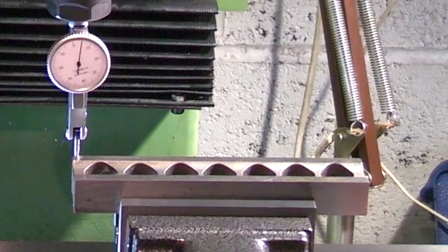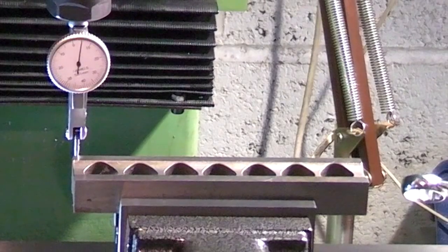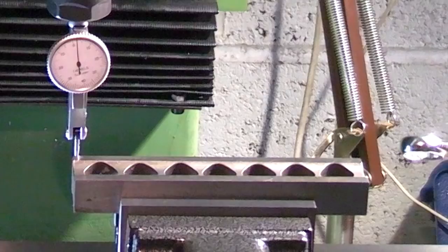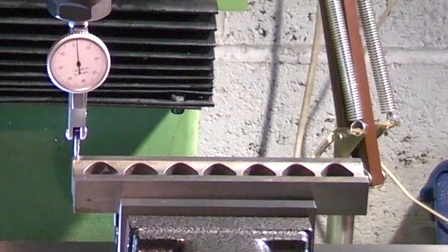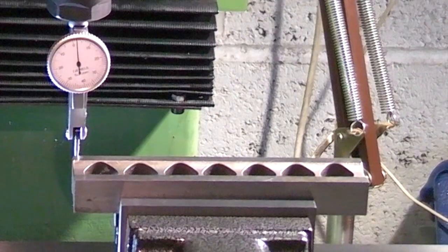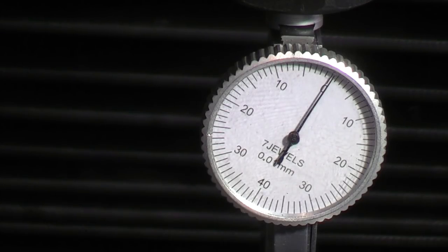I'm just slackening the one bolt off on the right. Now I'm tapping the vise with the rubber mallet just to halve the error on the dial indicator. Nip the vise nut back up again. Set the dial indicator to zero and retest.